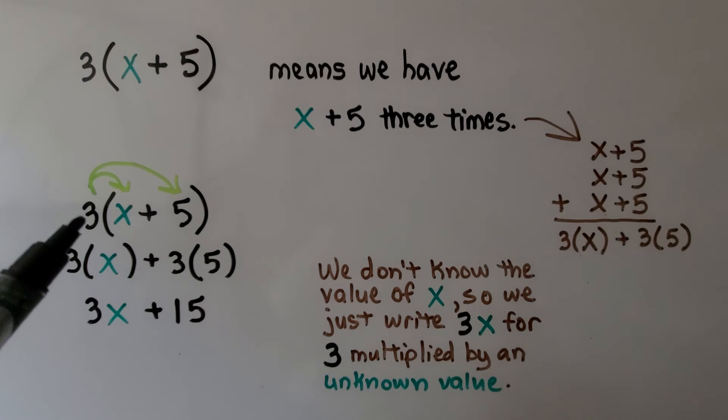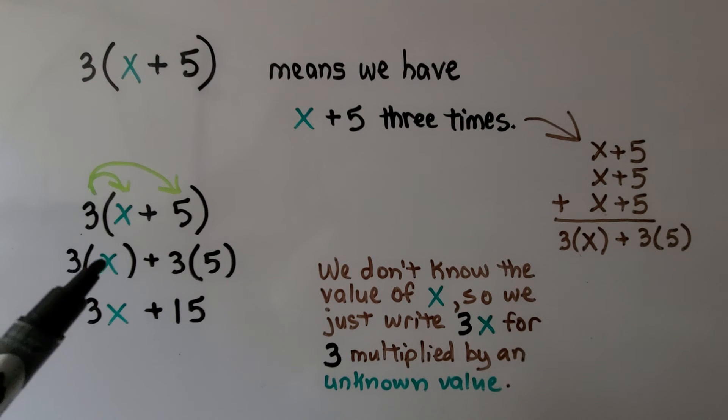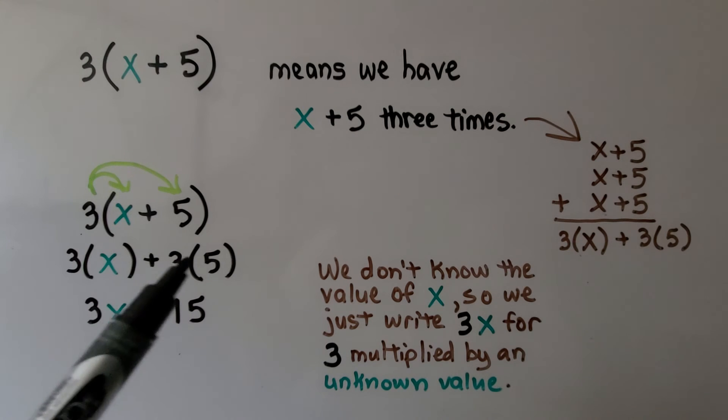We distribute the three. That means we have three times x, whatever number that stands for, and three times five. We have 3x + 15. We don't know the value of x, so we just write 3x for three multiplied by an unknown value.